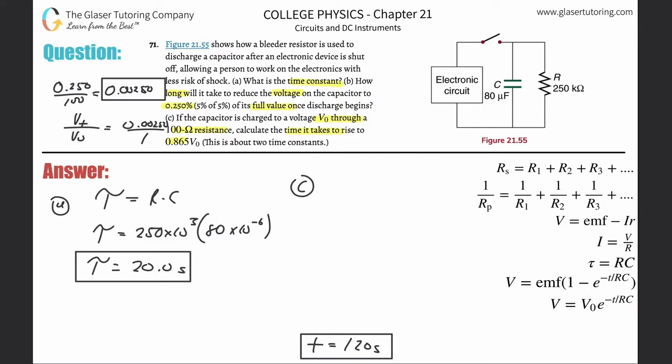Voltage at some point in time equals VO multiplied by one minus E to the negative elapsed time over RC. RC is just tau. But in this particular case, you got to be careful. The resistance has now changed. It's charging through a 100 ohm resistance. Please do not plug in 250 kiloohms anymore.